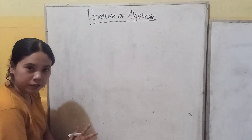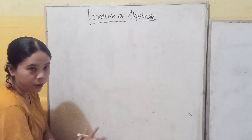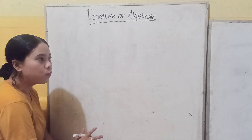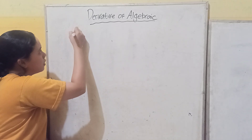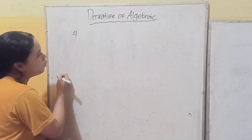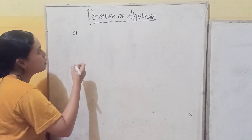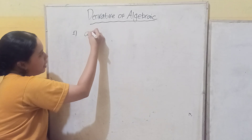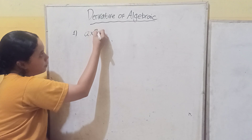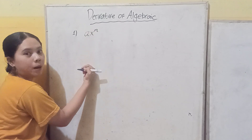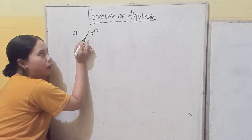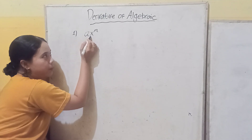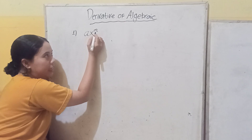So how to find the derivative for algebra. Here I will tell you first some formulas. The first one is about the general form, which is ax to the power of m, where a is a coefficient, x is a variable, and m is an index — that is, a power.